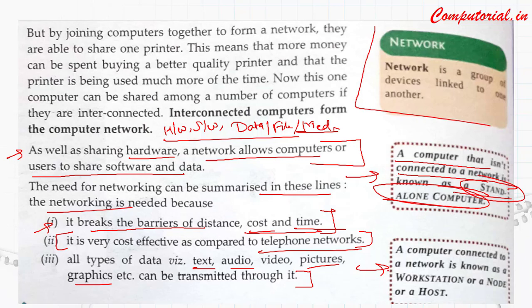Now the follow-up note: a computer connected to a network is known as a workstation, or a node, or a host. That computer which is connected to a network we call a workstation, a node, or a host. Now let's discuss this term 'network'. A network is a group of devices linked to one another - it is a group and a collection of various computing devices.